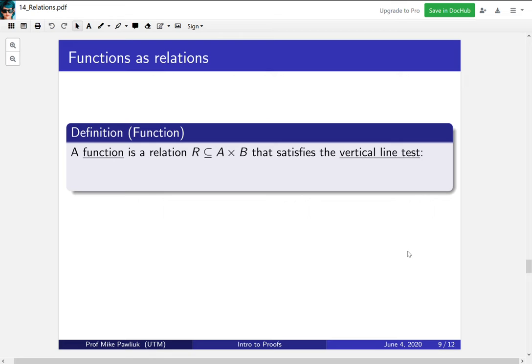Think about what the vertical line test should say in terms of a relation. It says for all a in the first thing, and for all b₁, b₂ in the second set, if (a, b₁) is in relation and (a, b₂) is in relation, then you have to have b₁ equals b₂. Basically, if an X outputs this Y, and an X outputs this Y, they really have to be the same thing. X's can only output one Y.